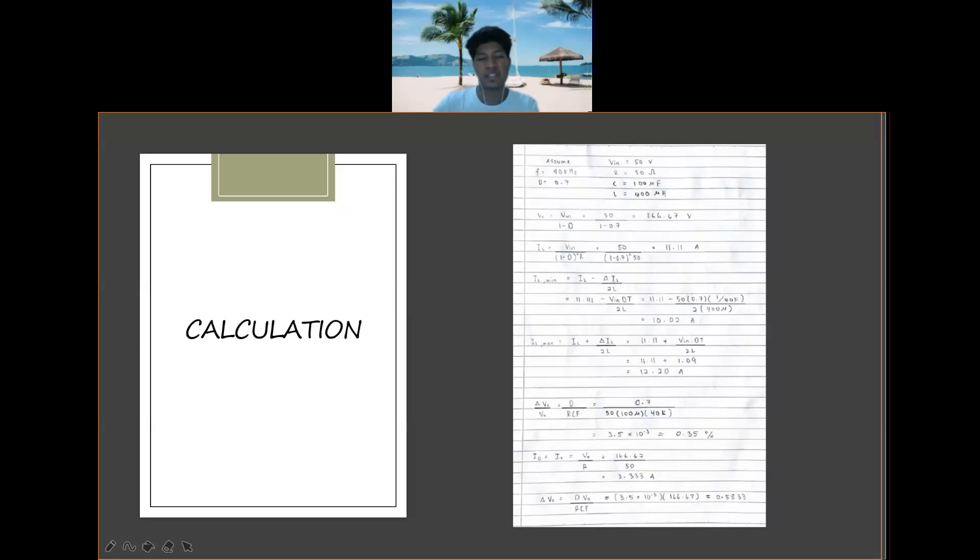They are a little difference between the measured value. It's because the measured value, maybe there are some components that we use have an error. So that's why the measured value and the calculation value are not the same one, they are different.